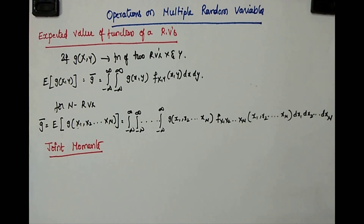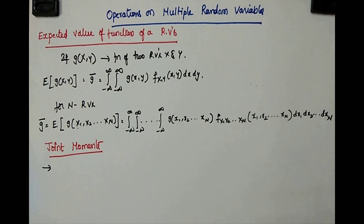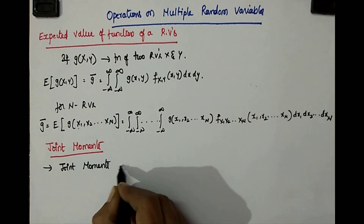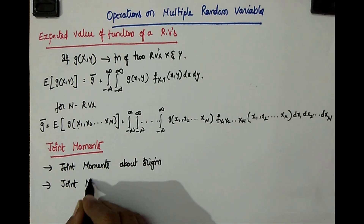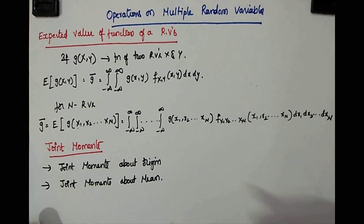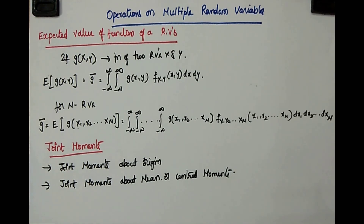The next operation is joint moments. Joint moments are the moments for multiple random variables; here we are restricting first to two random variables, hence these moments are called joint. There are two types: joint moments about origin and joint moments about mean, also called central moments.